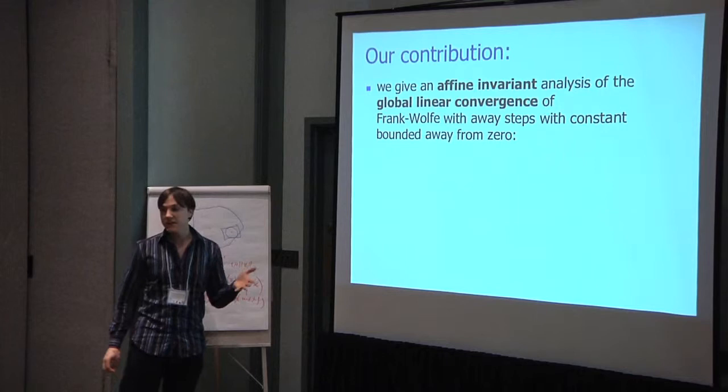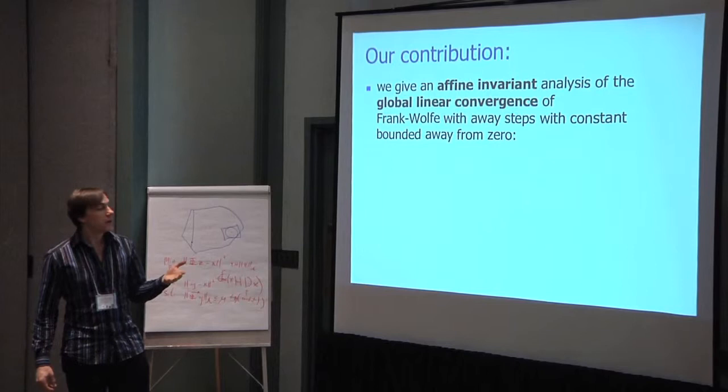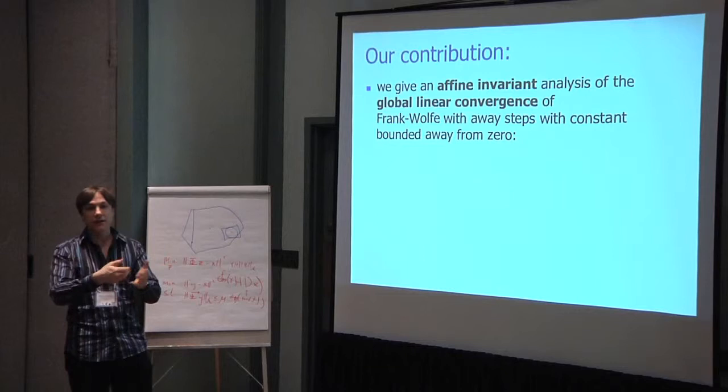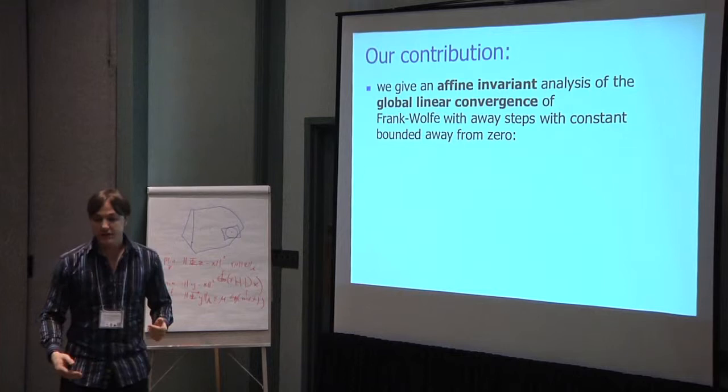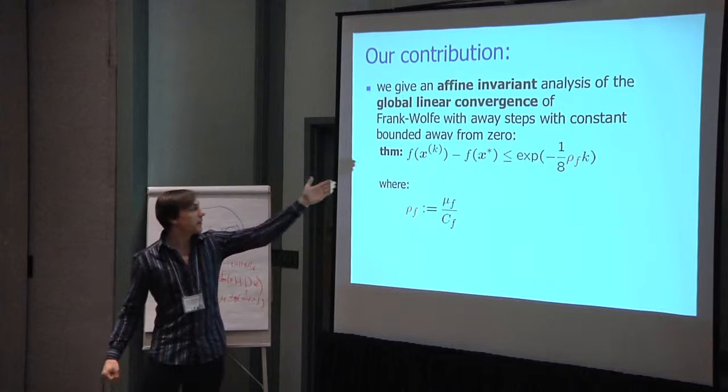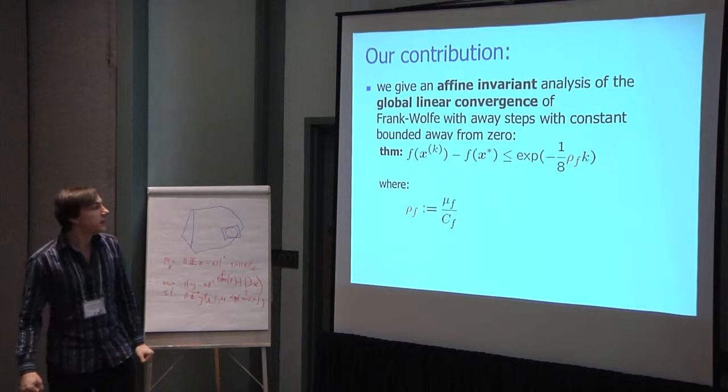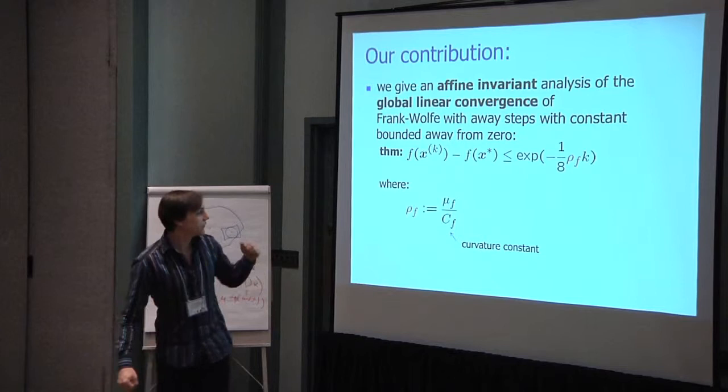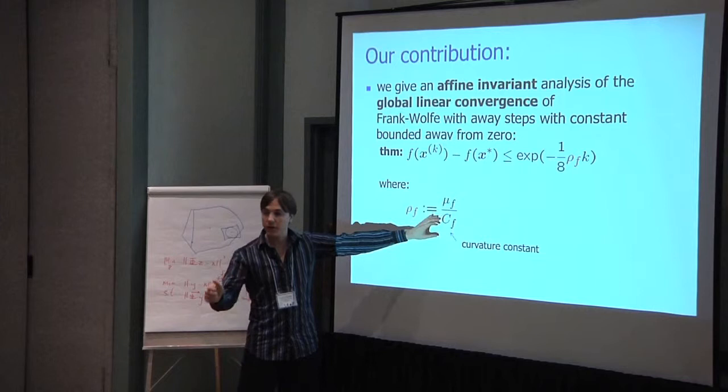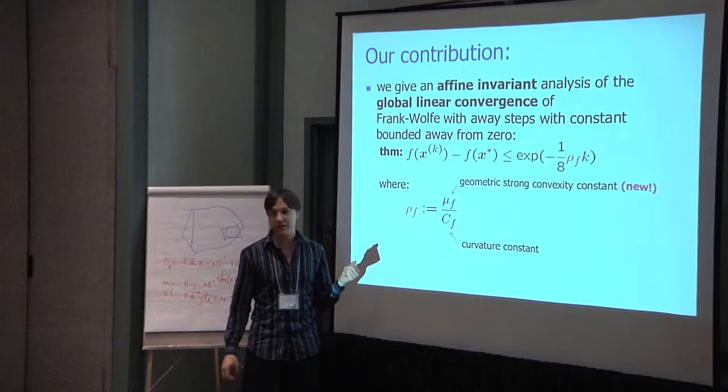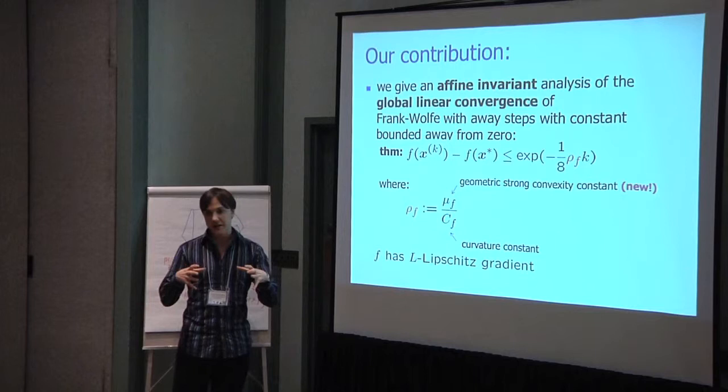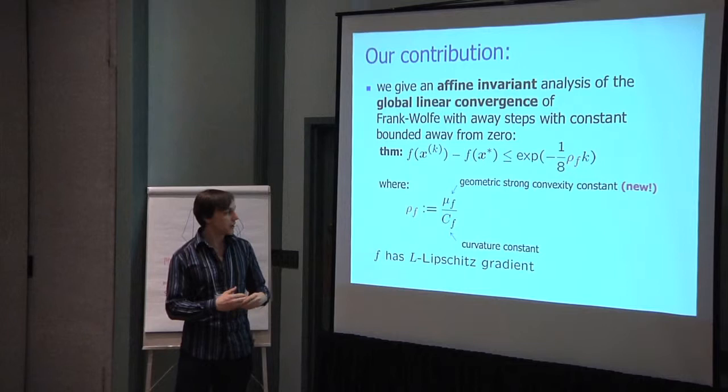That's basically our contribution: we actually give an affine invariant analysis. Also, we give it as a global linear convergence rate, which was not the case in Guélat and Marcotte, because they had this two phase where you first identify the optimal phase, and then you have some rate, whereas now we can already have the linear convergence rate right from the start. And we know that the constant is bounded away from zero. So the result looks like this. We have that the primal error will go at an exponential decaying rate with a constant rho, which is basically the ratio of two quantities. There's the curvature constant, which was in the standard Frank-Wolfe case, and there's this new constant that we define, which we call the geometric strong convexity constant, which is kind of related to both the geometry of the set as well as the strong convexity of the function.